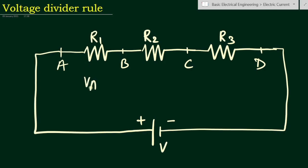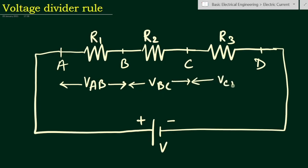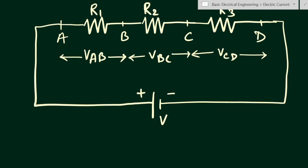So what will be V_ab? That means the voltage across points a and b. Suppose here we have V_bc, and here we have V_cd. These are the three voltage drops across the three resistances. So using the voltage divider rule, we can find out the voltage drop across any one of the resistances.